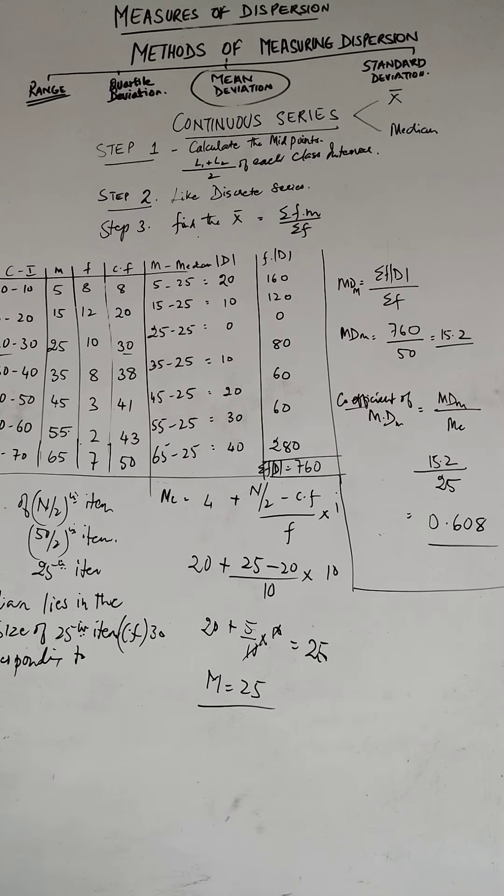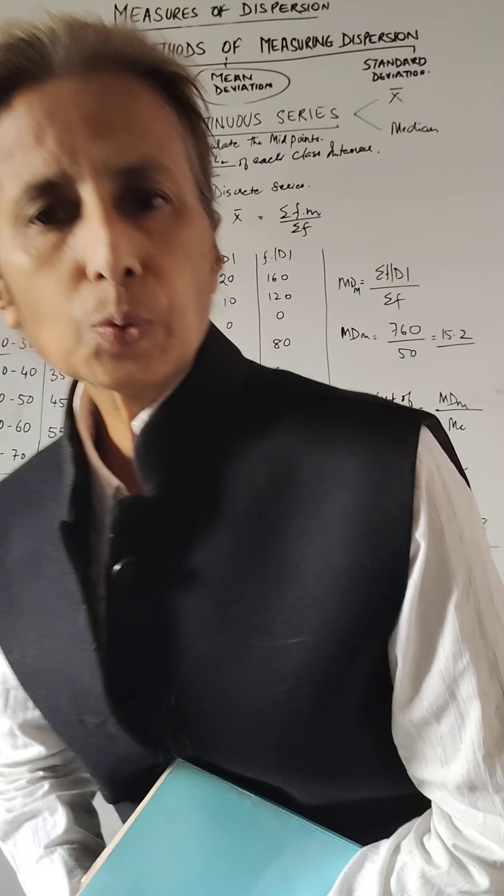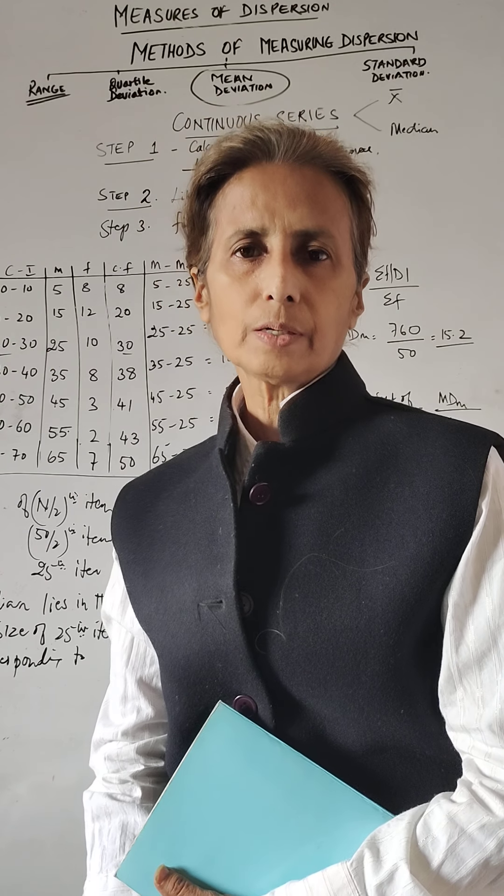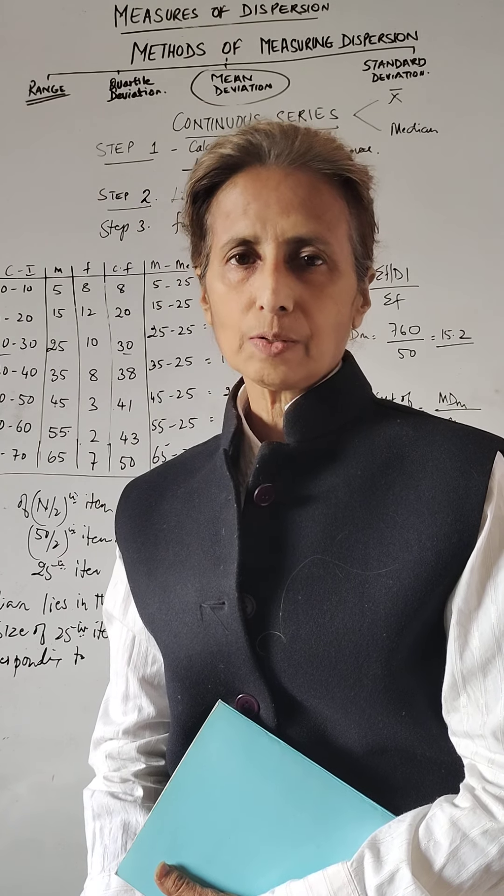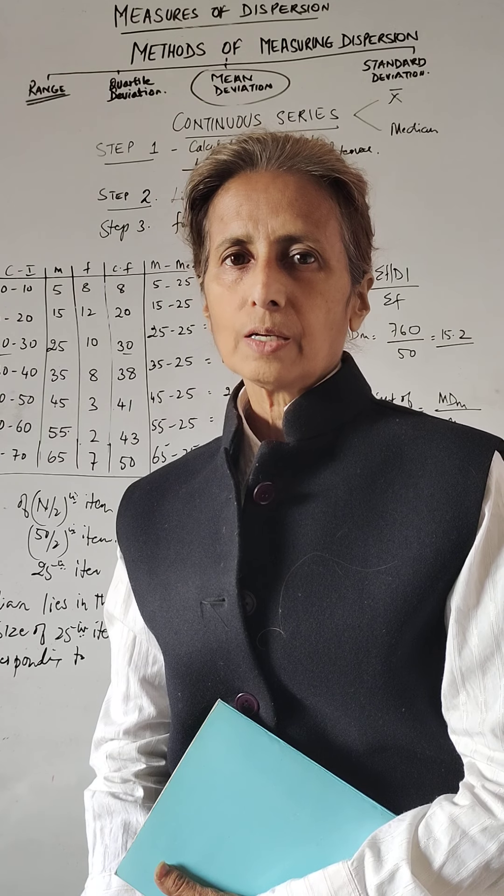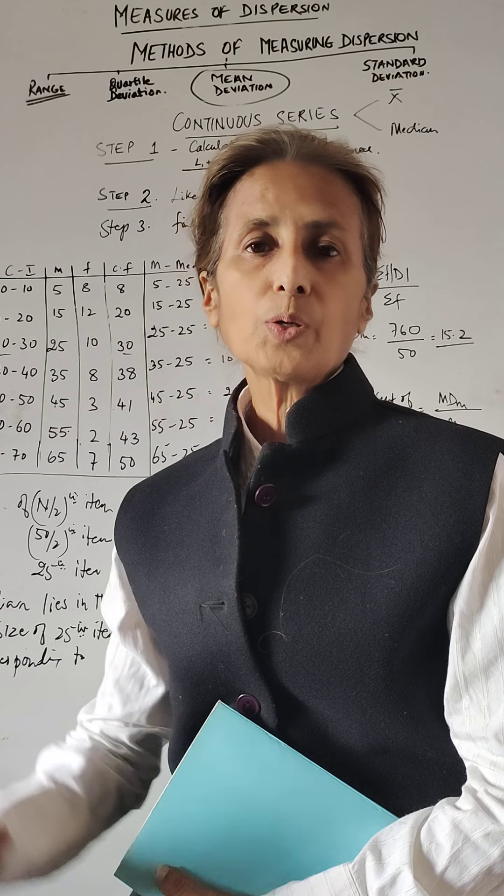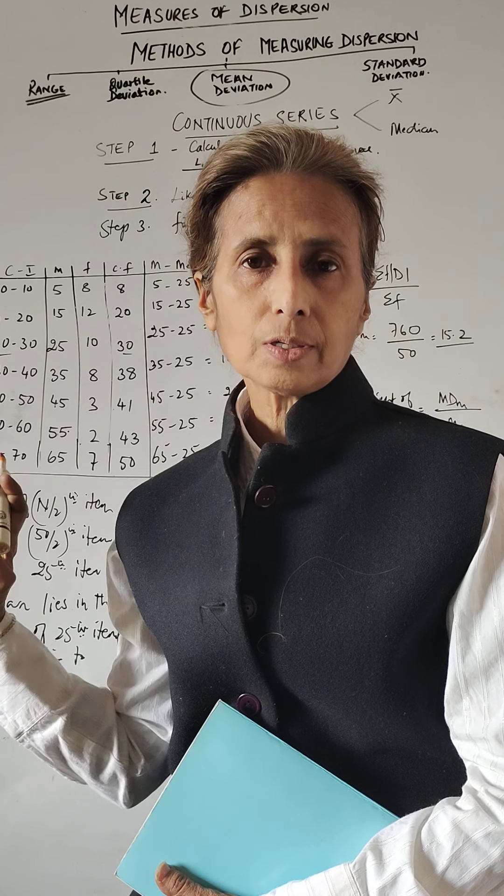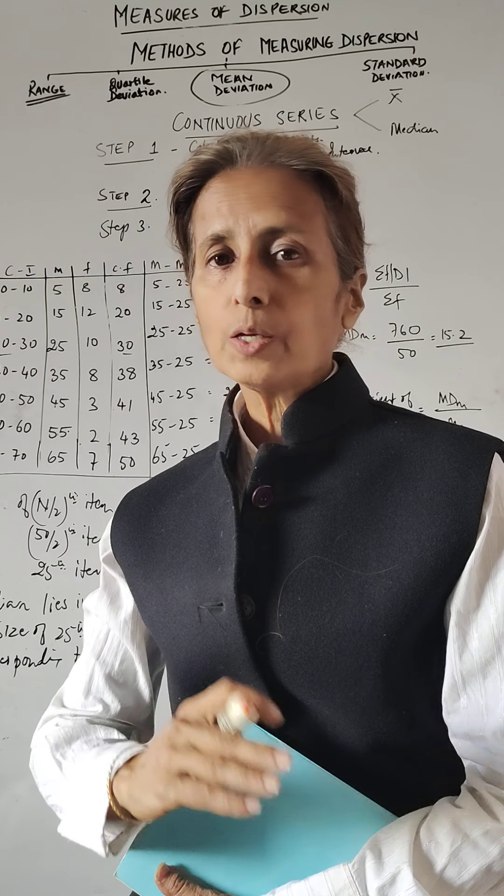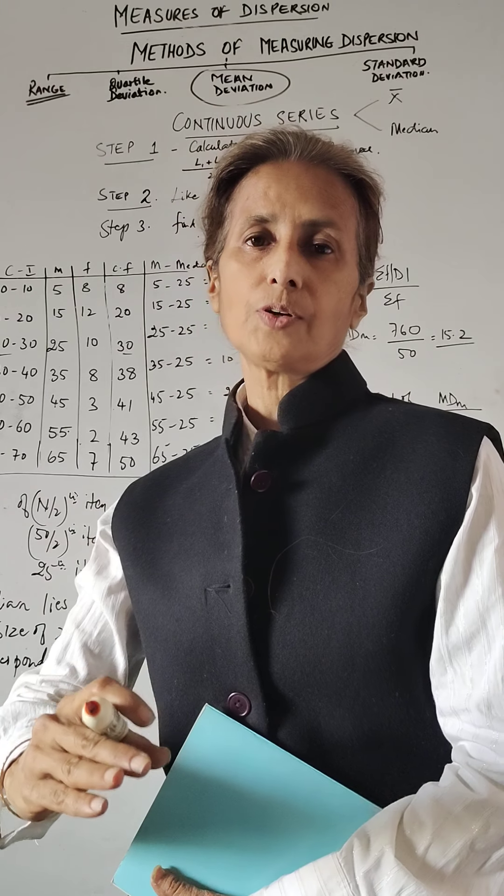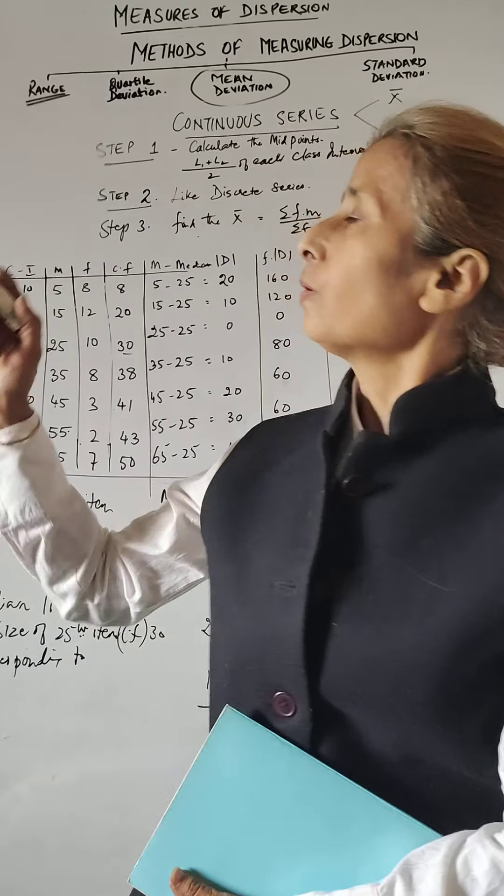So welcome to my class. We are doing unit 3 in which we are doing tools, unit 3 tools and their statistical tools and their interpretation. In that we finish with measures of central tendency and now we are doing measures of dispersion. That means how much does a value move away from the average. Now look at this.